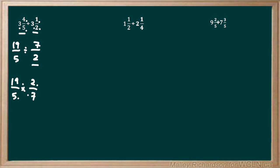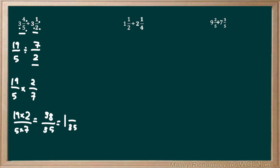We check if any cross terms can cancel out — in this case nothing can be reduced, so we proceed with the multiplication. The numerator is 19 times 2 and the denominator is 5 times 7: that gives us 38/35. We then convert this improper fraction to a mixed number. 35 goes into 38 once, so the whole number is 1. The denominator stays 35, and the numerator is 38 minus 35 times 1, which is 3. Our final answer is 1 and 3/35.